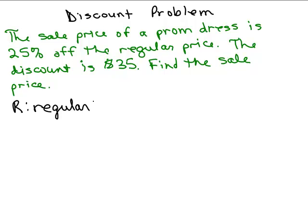If you prefer to use X or N, that works just as well. So we know that 25 percent off gives us this $35 discount. So 25 percent of the regular price is $35 basically. You can write 25 percent as a fraction or as a decimal. I'm going to write it as a fraction because it's a common fraction. 25 percent is 1 fourth. 1 fourth R equals 35.